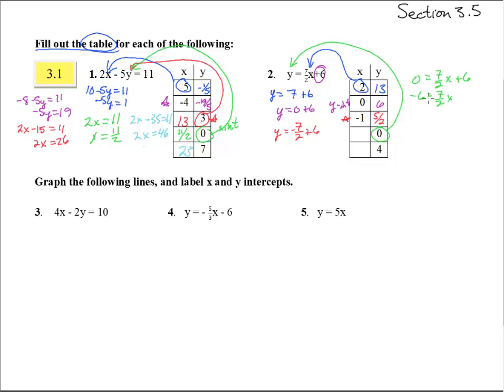We can still solve for that. Times by 2/7, and that will go away. Times by 2/7 is the same as dividing by 7/2, and we get x equals negative 12/7.